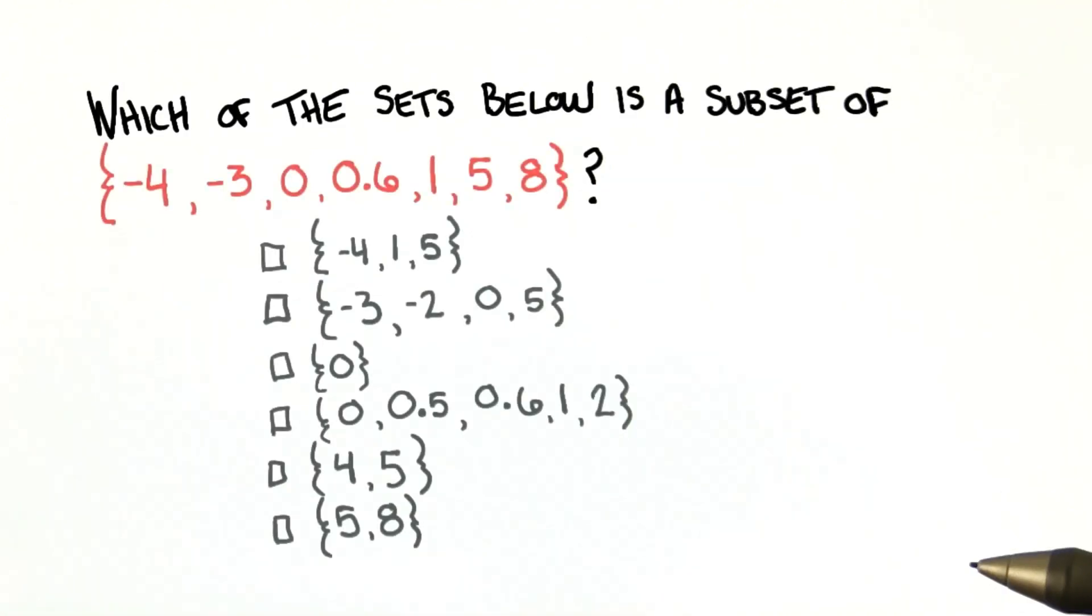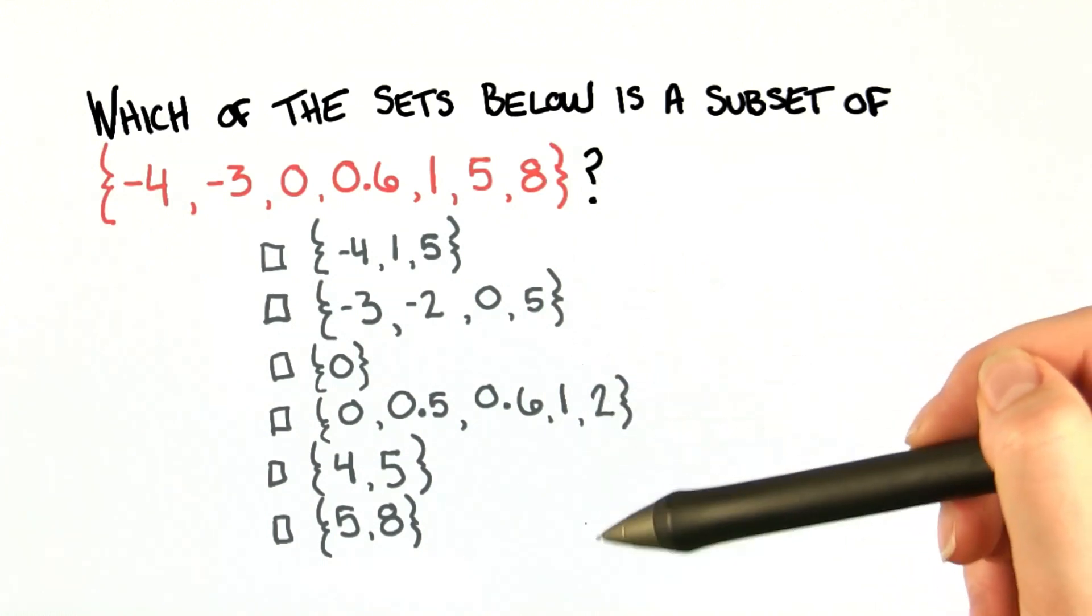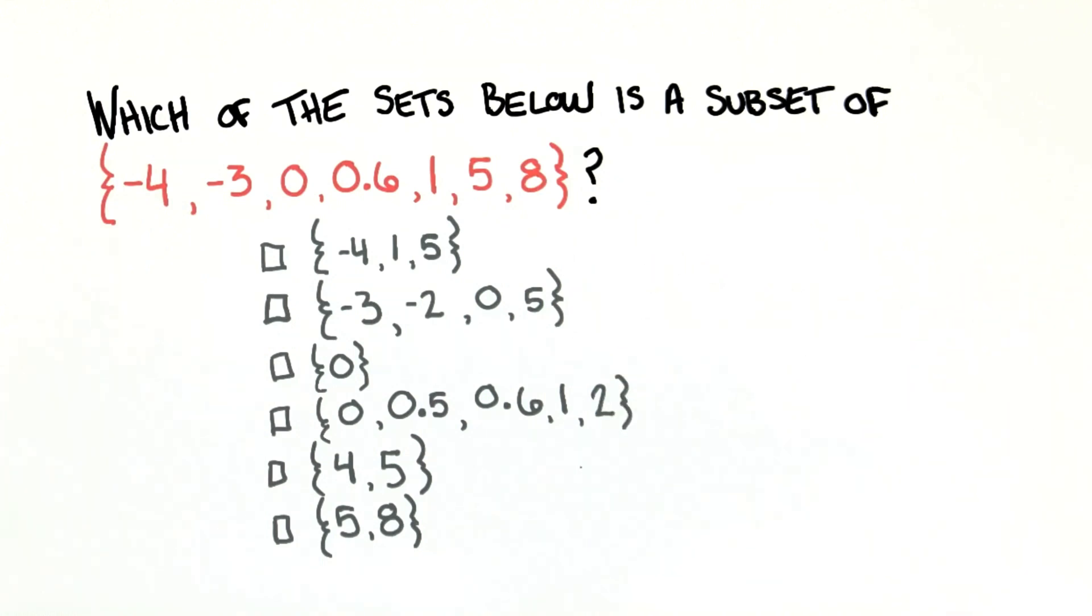So as a little bit of practice to make sure that you understand what sets and subsets are, here's a random set of numbers. Negative 4, negative 3, 0, 0.6, 1, 5, and 8. Which of the choices below are subsets of the set? You may pick more than one answer.